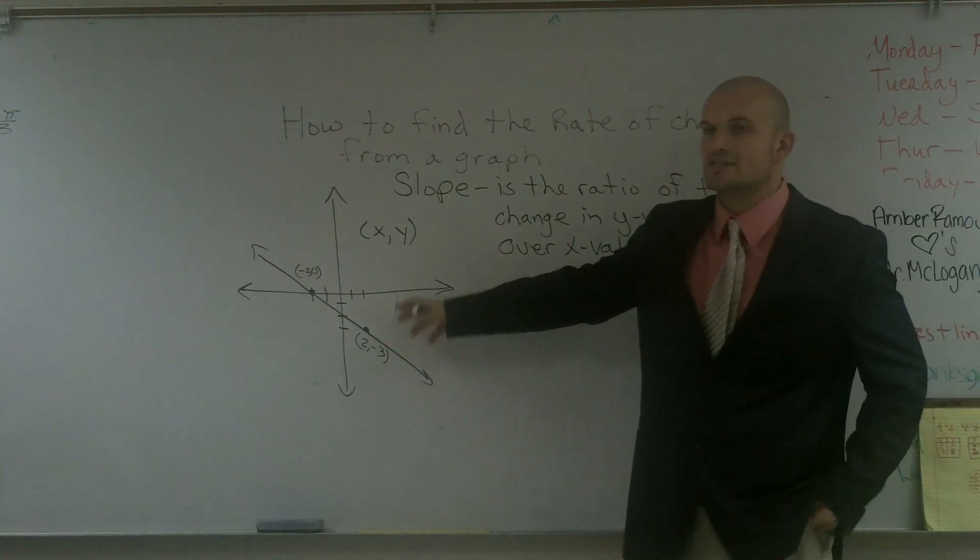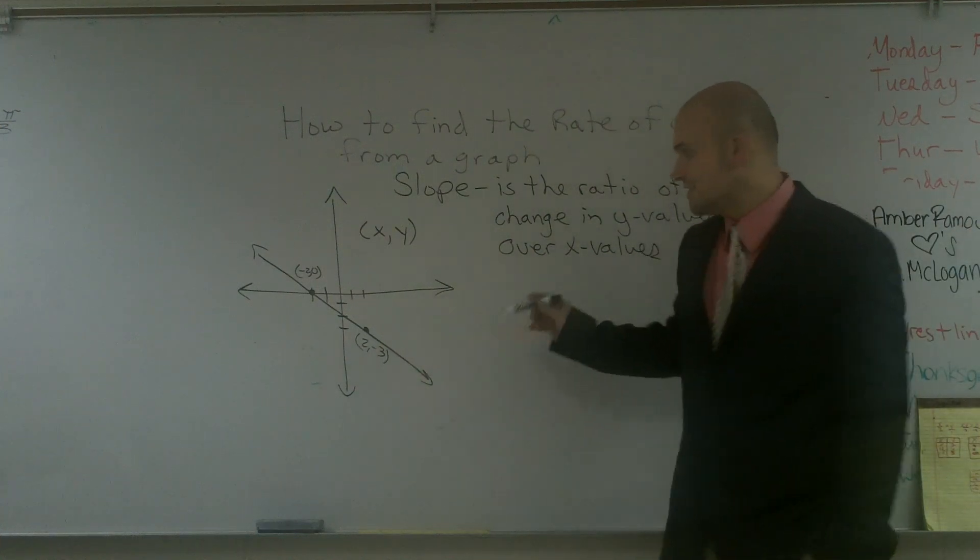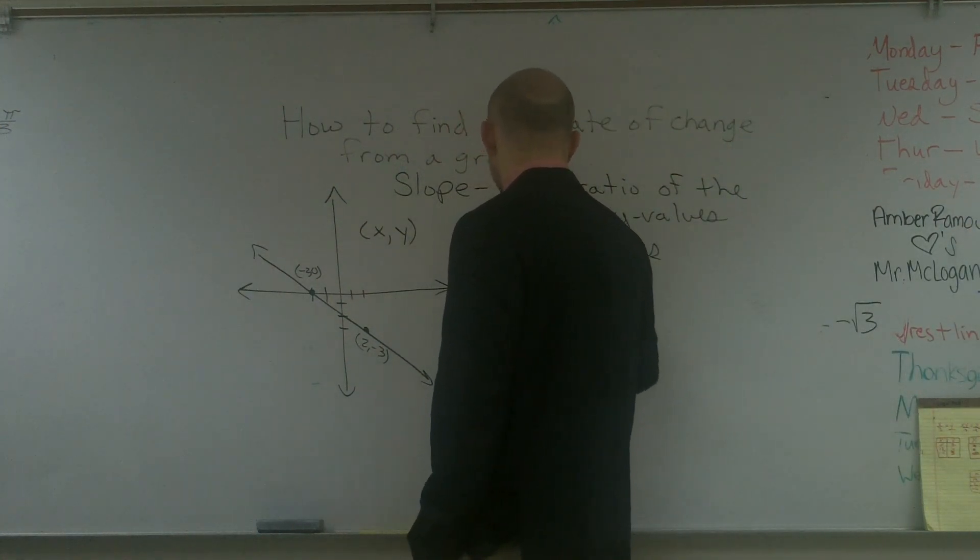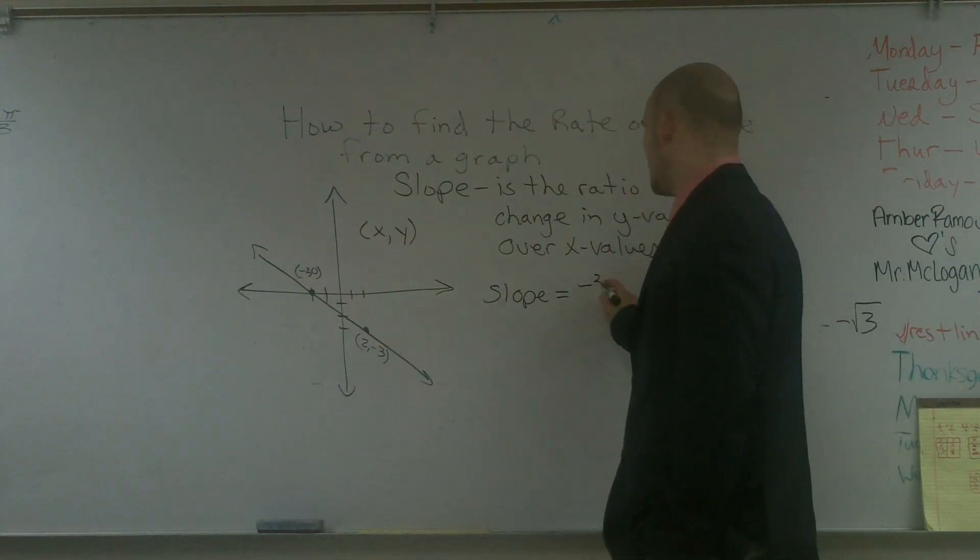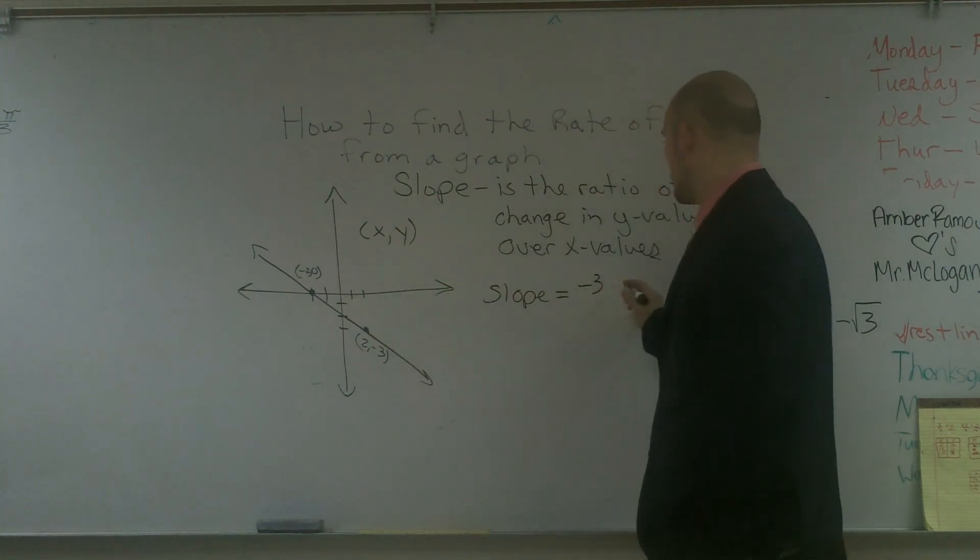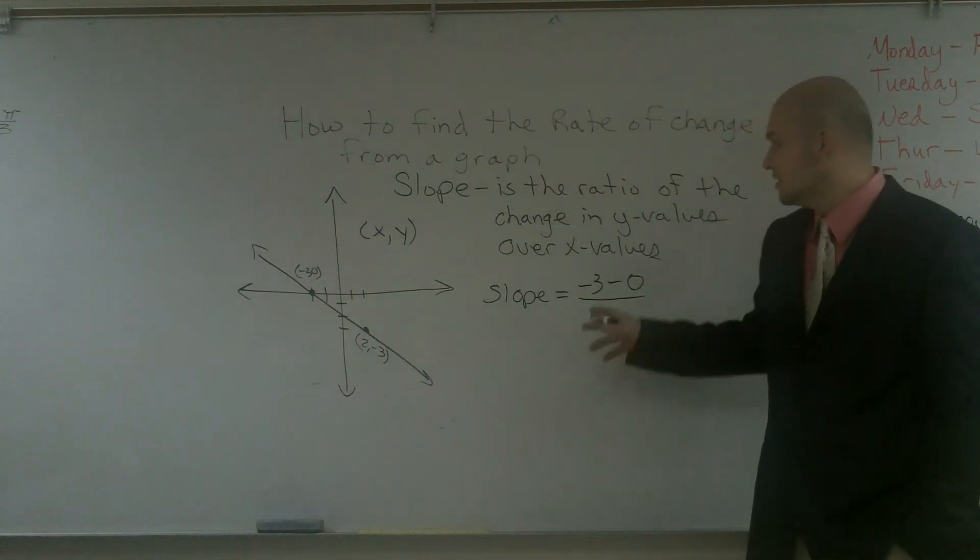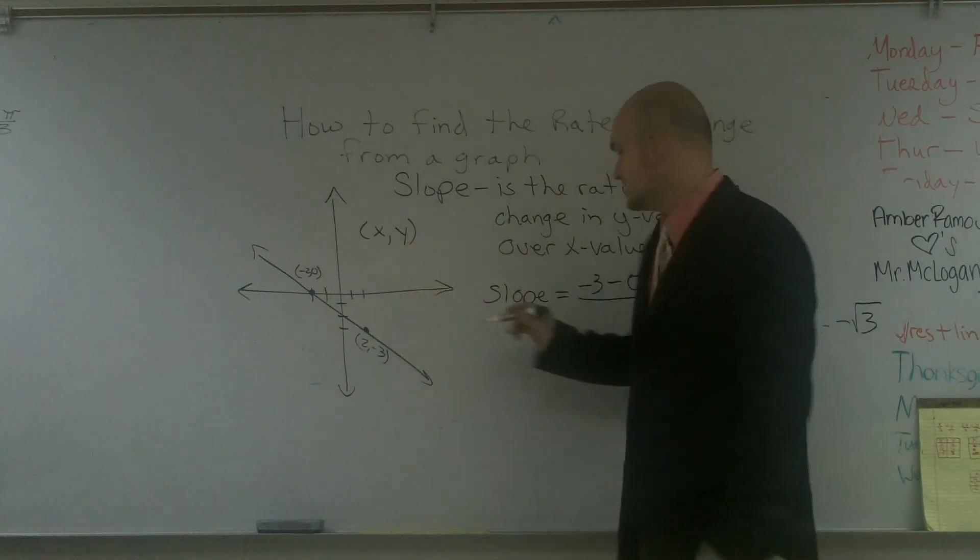So if I want to find the change in my y values, I need to subtract them. This y value is negative 3, so slope—we're going to get into the general formula for slope in a little bit—but the general formula is negative 3, that's one y value, minus my other y value, which is 0, over the change in my x value, which is 2 minus negative 2.